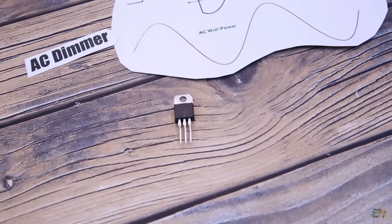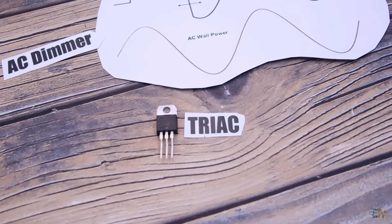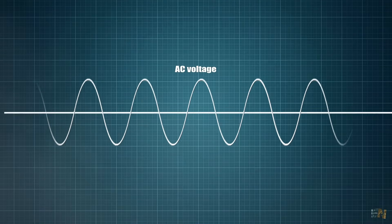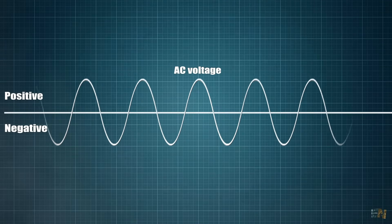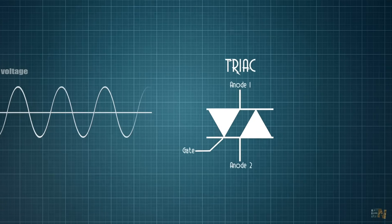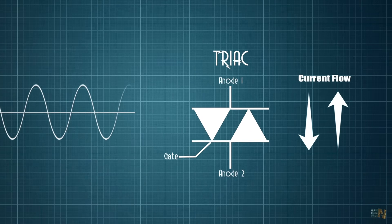To understand how the circuit works, let's first see how the triac works. This is AC voltage, which passes through negative and positive values. The triac could allow the current to pass in both ways, but with one condition.